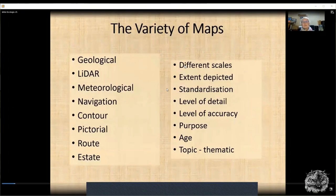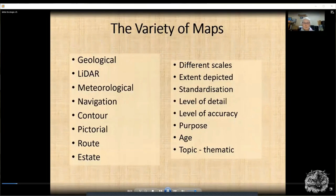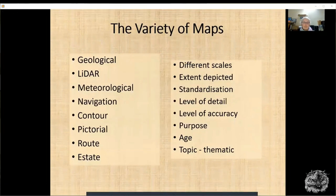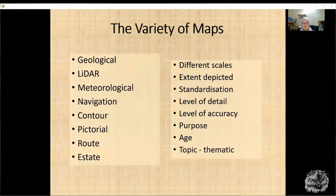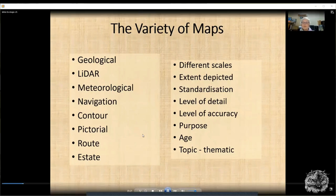Looking at the variety of maps — nowadays there are so many different types: geological, meteorological, navigation maps, contour maps, and so on. It's sometimes difficult to think that a couple of hundred years ago we were really at the pictorial end of things, with just a little bit of survey work just coming in.